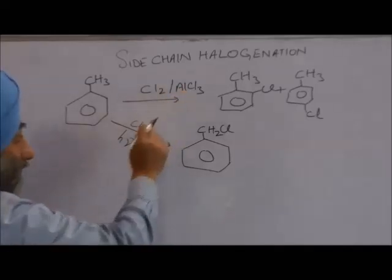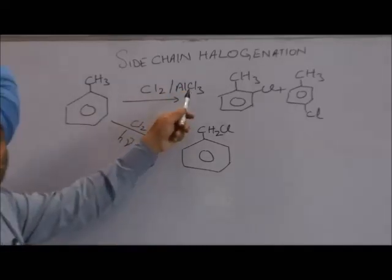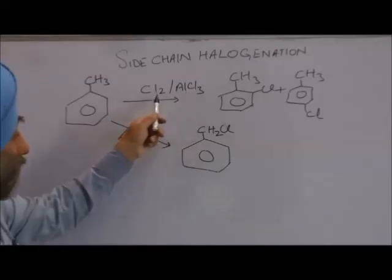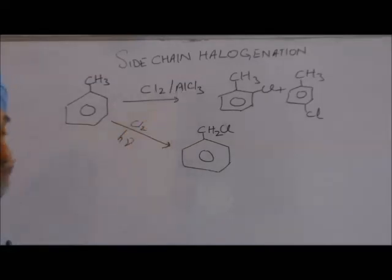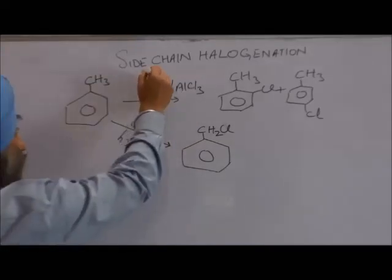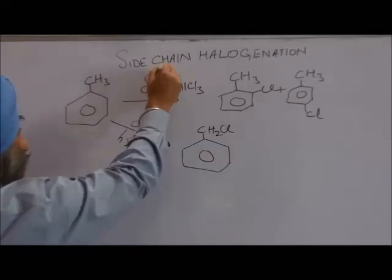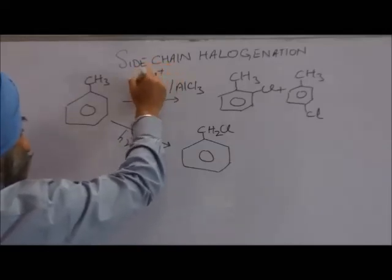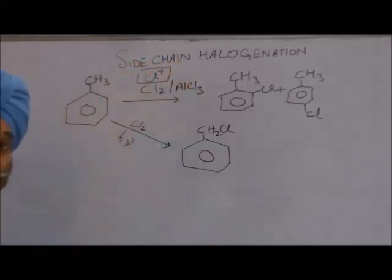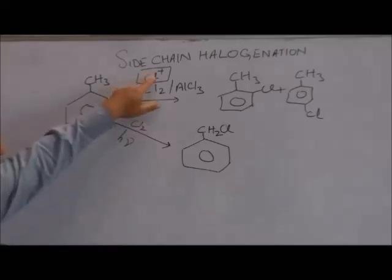AlCl₃ is a Lewis acid catalyst, and chlorine in the presence of a Lewis acid catalyst generates an electrophile — that is, Cl positive (Cl⁺).